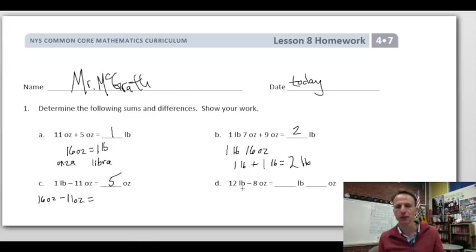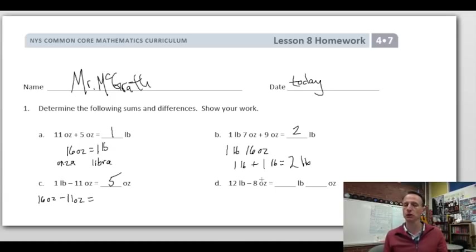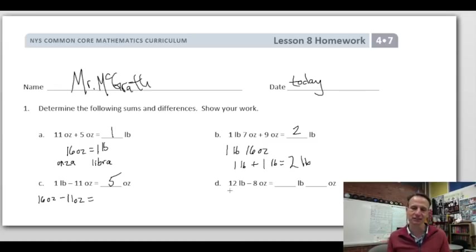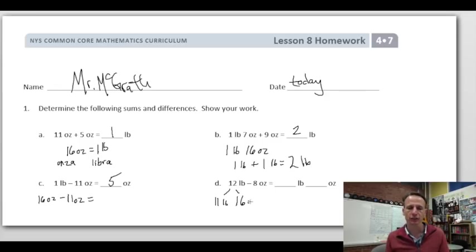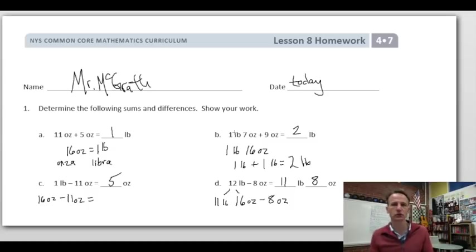Problem 1d: 12 pounds minus 8 ounces. On a standardized test, a wrong answer trap would be 'four' if you just did 12 minus 8. Instead, like working with mixed numbers, leave 11 pounds alone and decompose one pound as 16 ounces. Then 16 minus 8 is 8 ounces, giving us 11 pounds 8 ounces — which we could also call 11 and a half pounds.